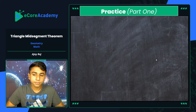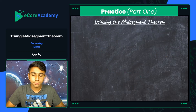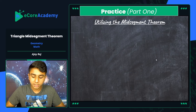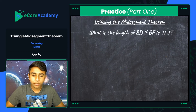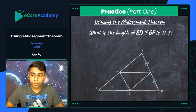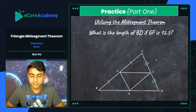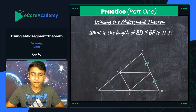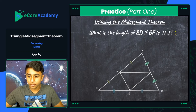Let's look at practice part one. We're going to start with our first type of problem, utilizing the mid-segment theorem and proportional relationships. We're going to discover: what is the length of BD if GF is 12.5 units? Since no unit of measure is given, we'll refer to it simply as units.